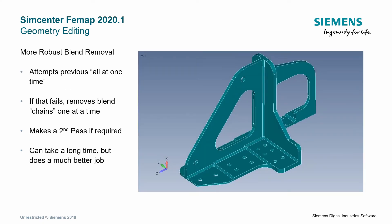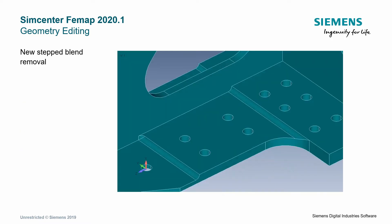This change is fairly self-explanatory: FEMAP has upgraded their blend removal tool. It now can take a little bit longer, but it's a more robust operation. You can see that it first removes all the corner blends and then removes the blends in the stepped region — just a more robust blend removal feature overall.